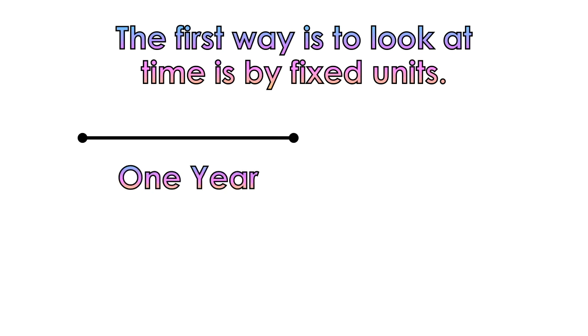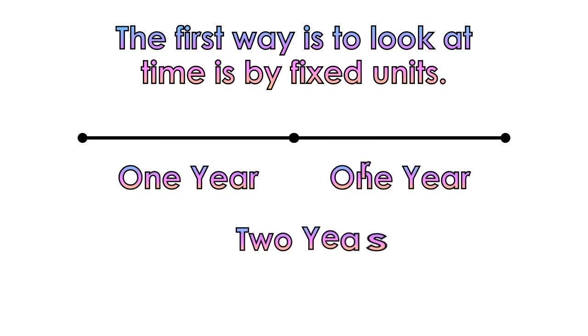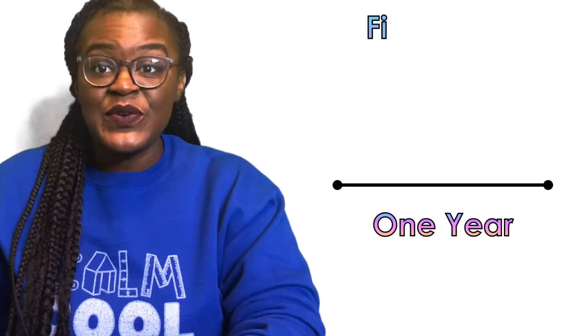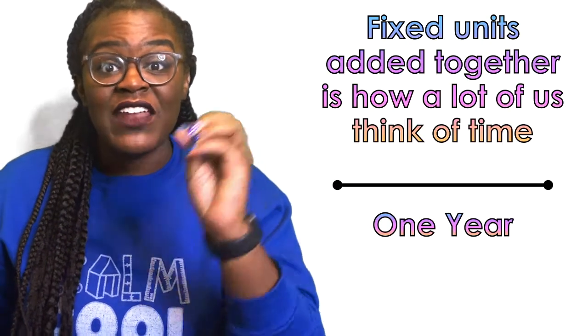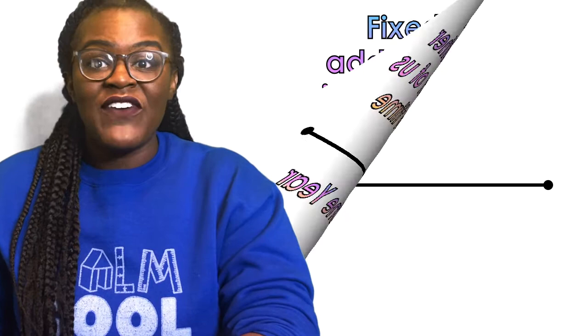So if I add another line, that's another year. So all together, I have two years. Fixed units added together is how a lot of us think about time. But what if I said instead that time was one whole unit?